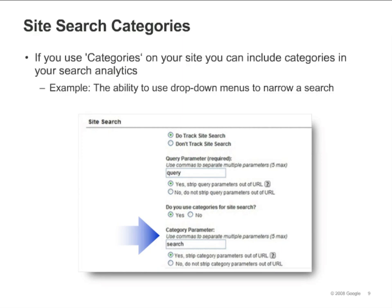You can also contact your webmaster to identify the query and category parameters for your site. Decide if you want to strip out the category parameters that you just provided. If you select Yes, only the parameters you provided will be stripped out. As with the query parameter setting, this has the same effect as excluding URL query parameters in your main website profile settings. So, if you choose to strip the category parameters here, you don't have to exclude them again from your main settings. Click Save Changes to finish.